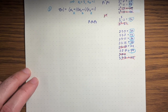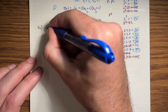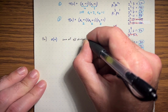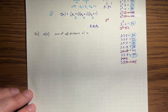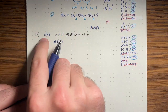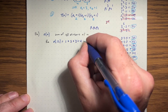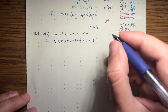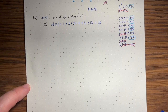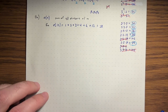Our next arithmetic function is sigma(n), also called the sum of divisors — the sum of all positive divisors of n. For example, sigma(12): the divisors of 12 are 1, 2, 3, 4, 6, 12, and their sum is 1+2+3+4+6+12 = 28. This function is sometimes also called sigma_1(n).